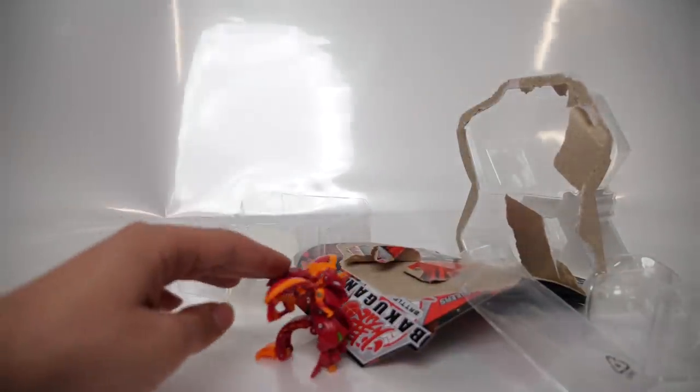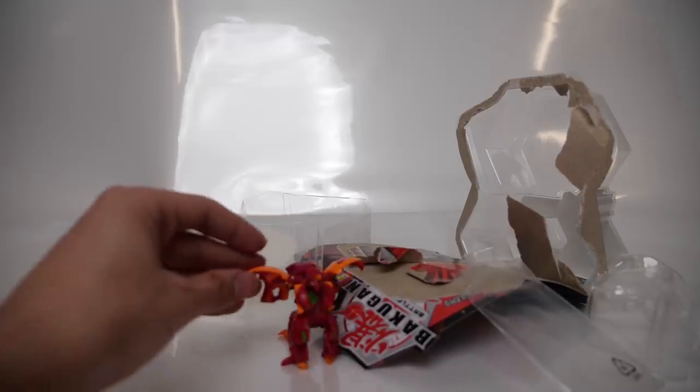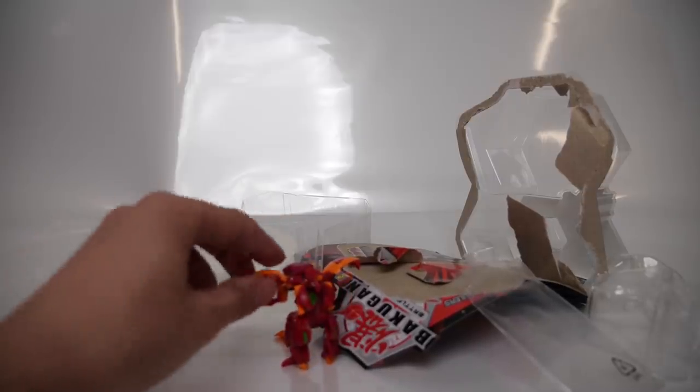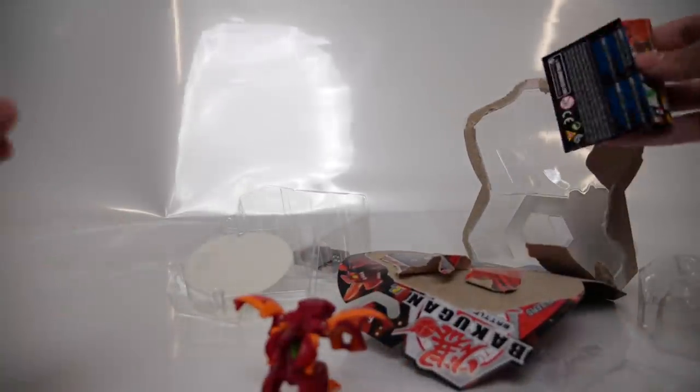When he stands, his tail actually supports him so that he doesn't fall over. So Dragonoid Ultra stands very, very, very well. And let's bring out the instructions that every Bakugan comes with to find out how to open him up. Or sorry, how to close him up.